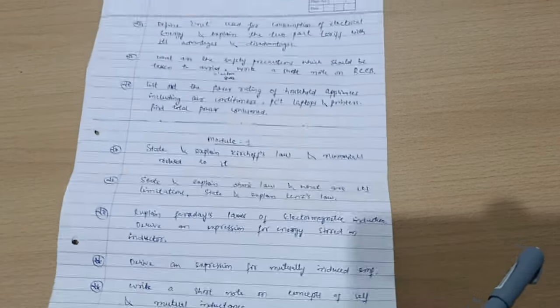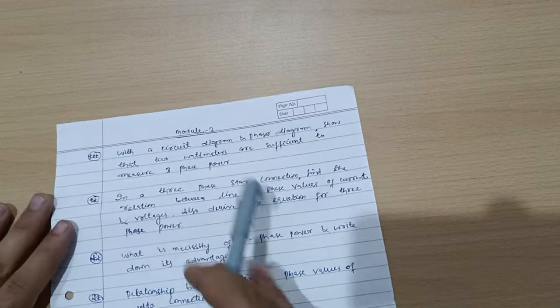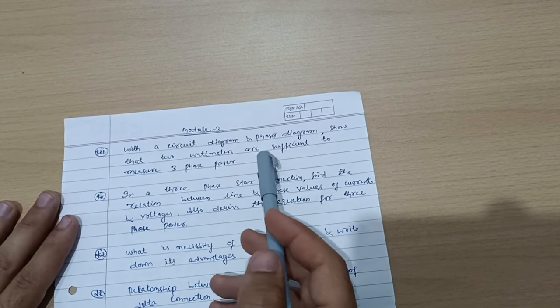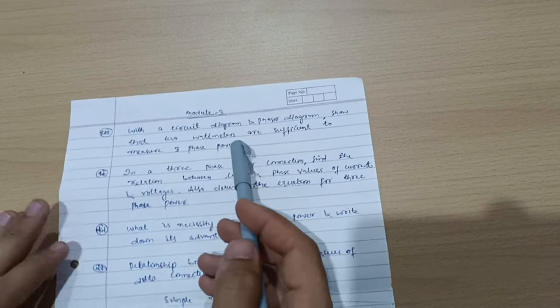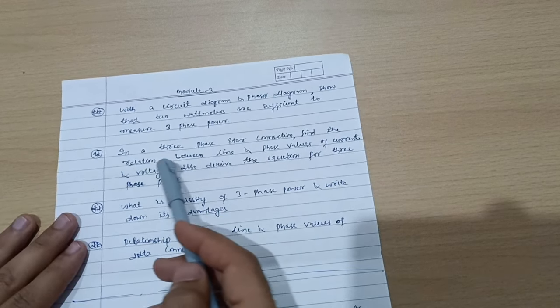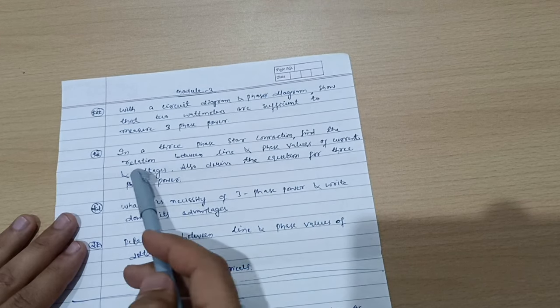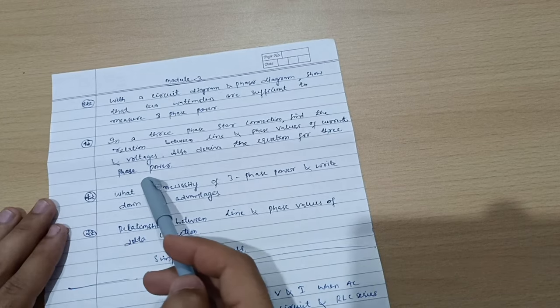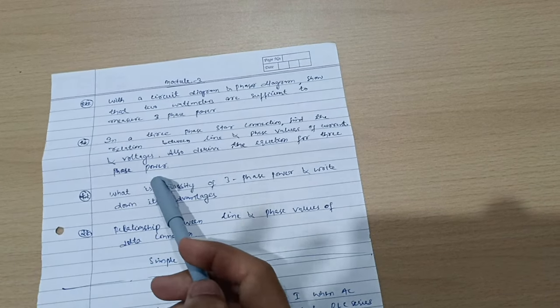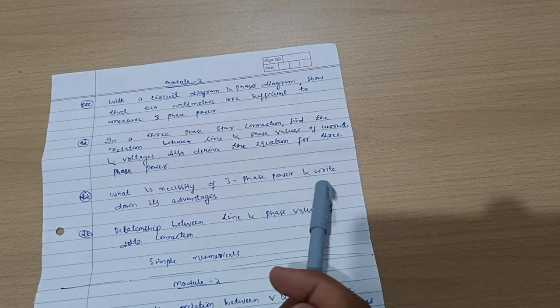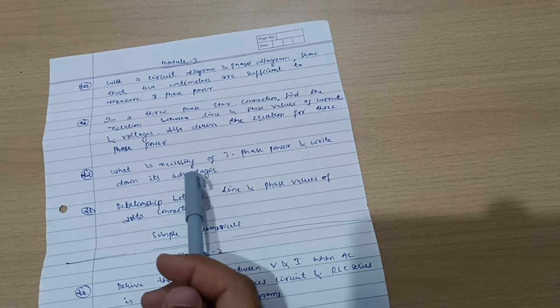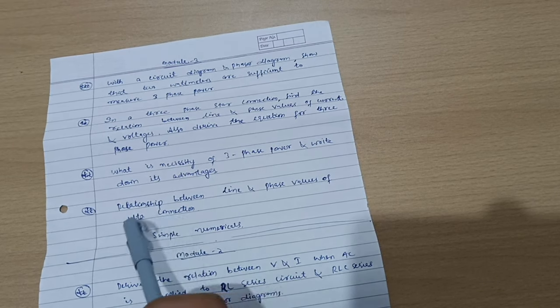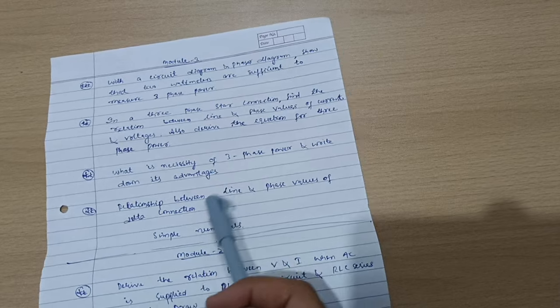This much is enough to cover Module 1. Then we come with Module 3. With a circuit diagram and phasor diagram show that two wattmeters are sufficient to measure three-phase power. Super important question. In a three-phase star connection, find the relation between line and phase values of current and voltage. Also derive the equation for three-phase power. What is necessity of three-phase power and write down its advantages and sometimes derive the expression for three-phase power. Relationship between line and phase values of delta connection. It was star connection, this is delta connection.